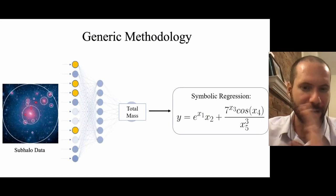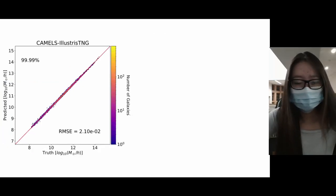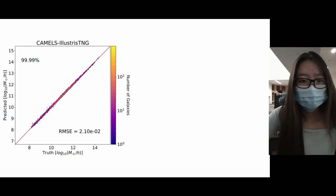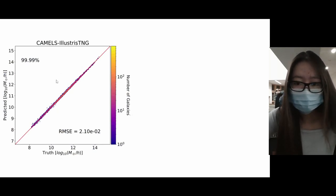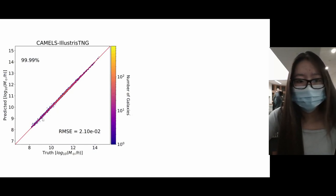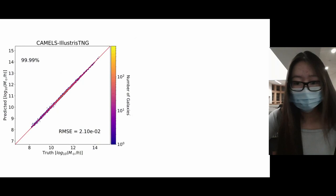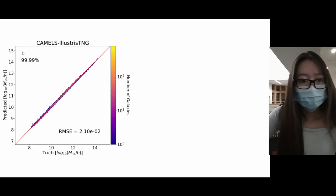We trained a neural network on subhalos from the CAMELS IllustrisTNG, which contains different astrophysics and cosmologies, to learn the total mass of the subhalo. Once trained, we show the predictions on subhalos the network has never seen before. This figure is a 2D histogram where each bin's color indicates the number of subhalos it contains. The x-axis shows the true value of total mass and the y-axis shows the predicted. The closer these bins are to the y=x line, the more accurate the predictions. The model is doing very well, with an RMSE of only 2×10⁻², and over 99% of predictions lie within 0.2 dex of the true value.